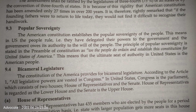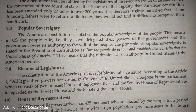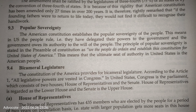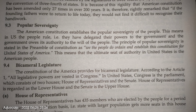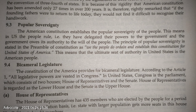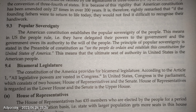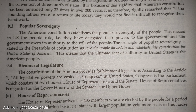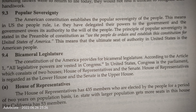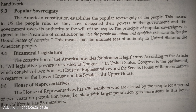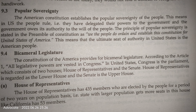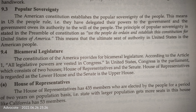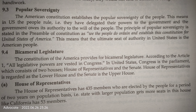Another salient feature of the U.S. Constitution is popular sovereignty. The American Constitution establishes the popular sovereignty of the people, meaning that in the United States the people rule. They have delegated their powers to the government and the government owes its authority to the will of the people. The principle of popular sovereignty is stated in the preamble: 'We the people do ordain and establish this constitution for the United States of America.' This means the ultimate seat of authority is the American people.